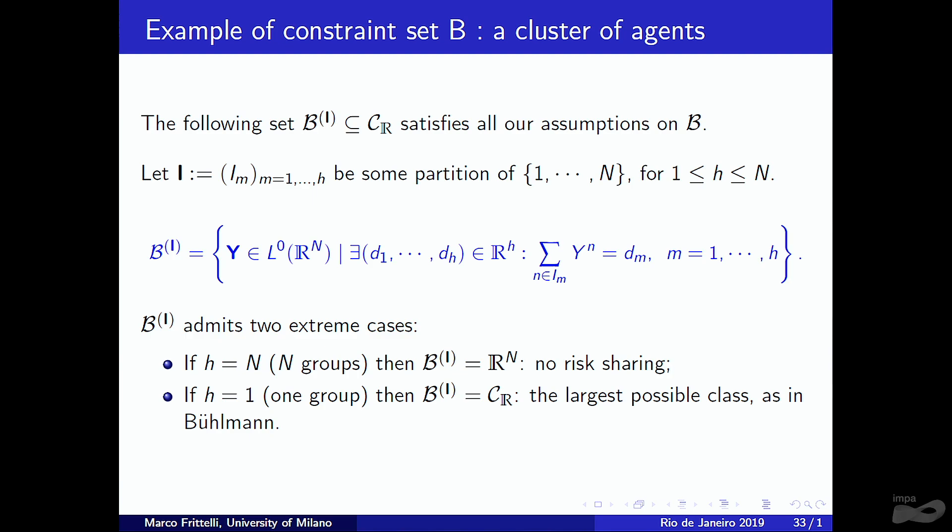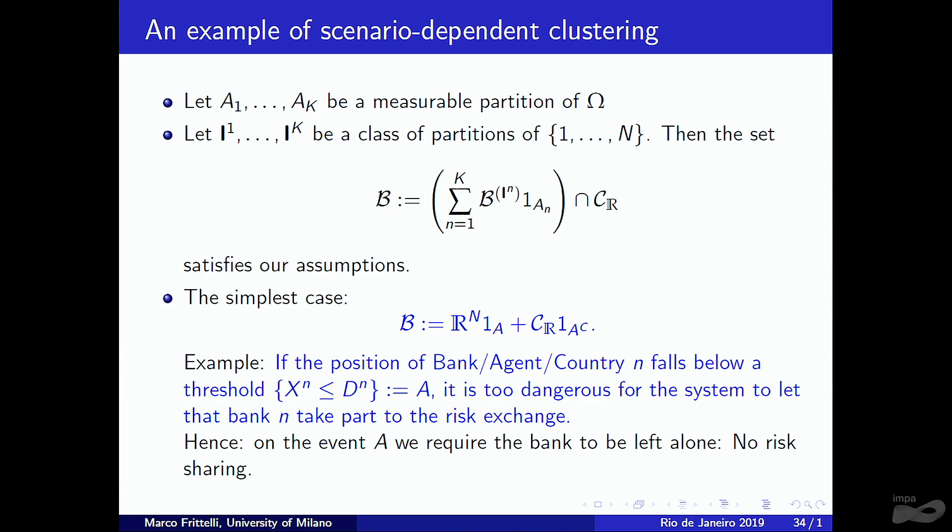An example of feasibility constraint set B: suppose N agents are divided into H groups, each denoted Iₘ. We require that the sum of the Y components within each group is constant. If there are N groups — one agent each — then Y must be deterministic, meaning no risk sharing. At the other extreme, one single group gives full risk sharing, recovering the Bühlmann case.